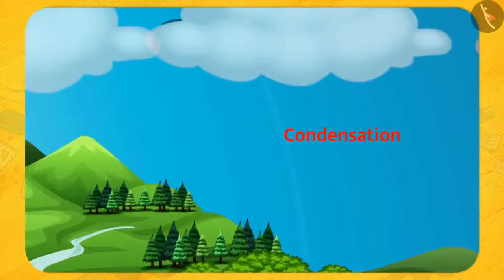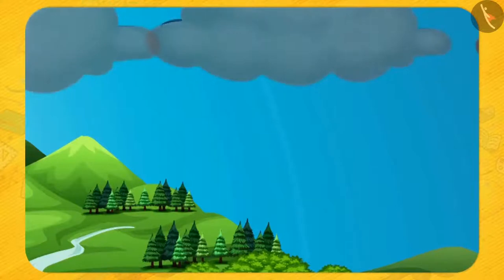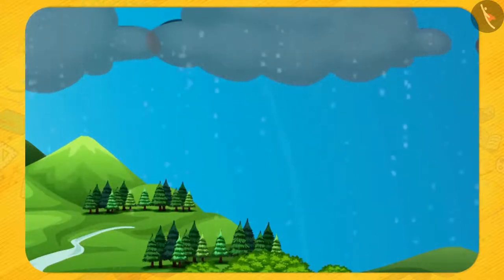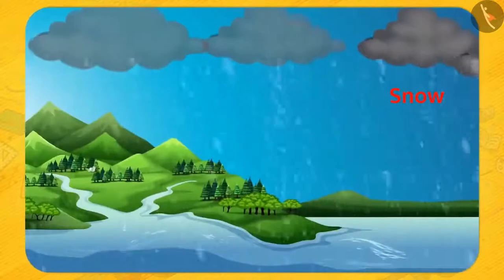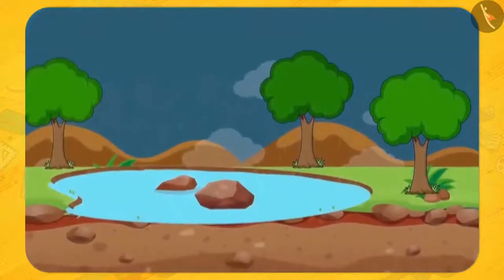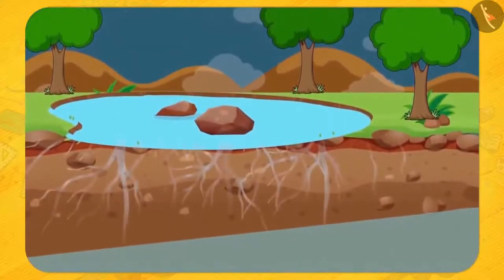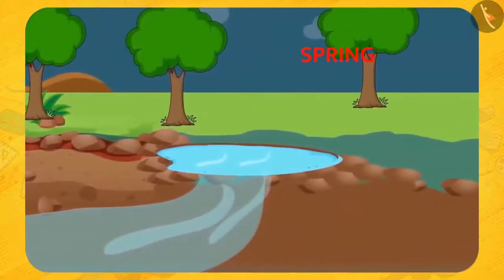Due to continuous condensation, these clouds become heavy and they fall down in the form of water droplets, which we call as rain. This process is called precipitation. Sometimes due to low temperature, precipitation also occurs in the form of snow or hail. Some of the water falling on the earth seeps into the ground and is available as groundwater. Some part of this water also reaches the surface through springs.